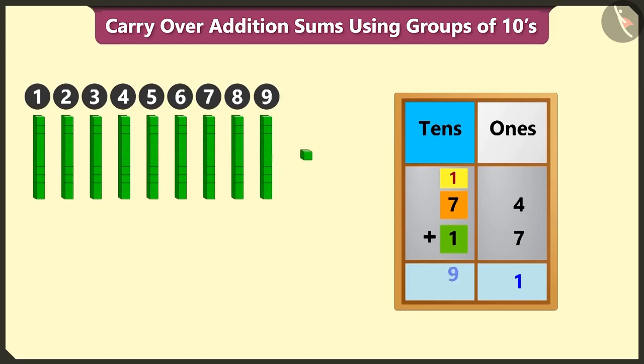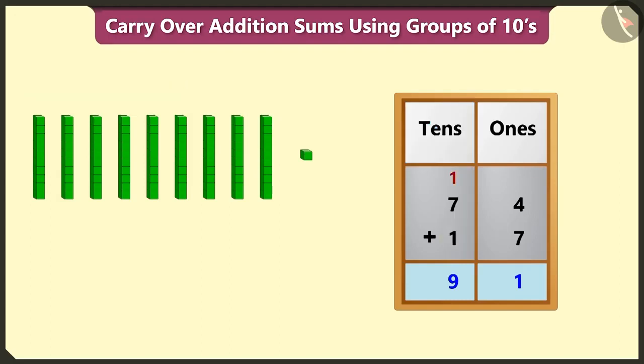So we have to write 9 in the tens box. 74 added to 17 will give us a total of 91.